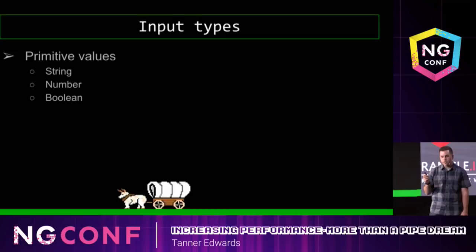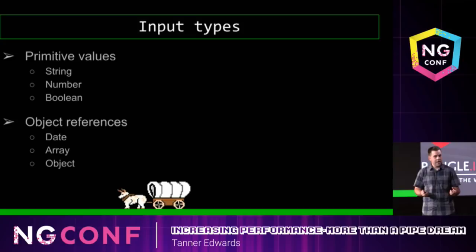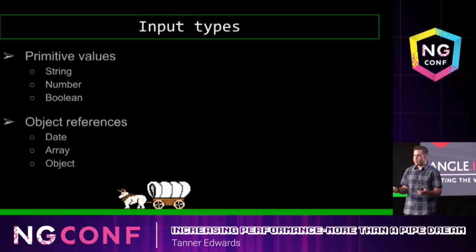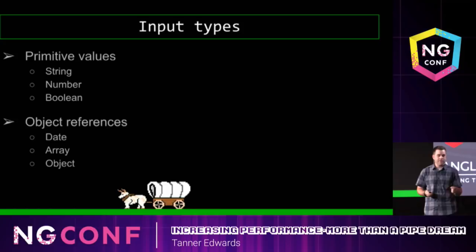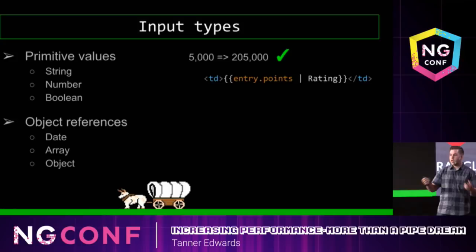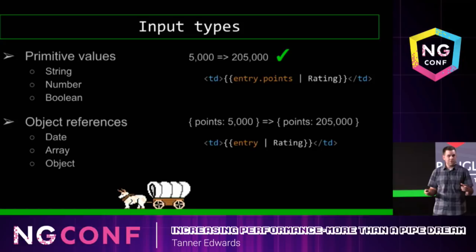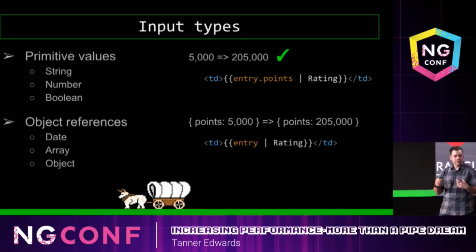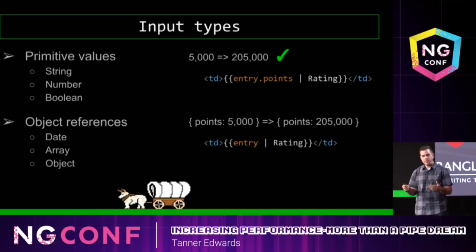Now there is one caveat to pipe inputs. To Angular, to a pipe, there are two kinds of inputs: primitive values and object references. If either of these input values change, Angular will give us a new output value. However, if a primitive value inside of an object reference changes, Angular will not give us a new output. For example, if our input changes from 5,000 points to 205,000 points, Angular will give us a new output. But if our input is an object that contains points and those points change, Angular will not give us a new output, because the object reference didn't change — just the primitive value inside of the object reference changed. So that's why it's a good idea to keep your pipe inputs as primitive as possible.